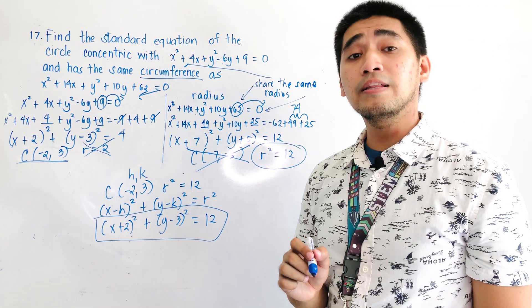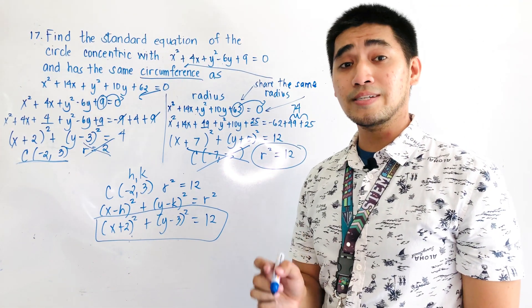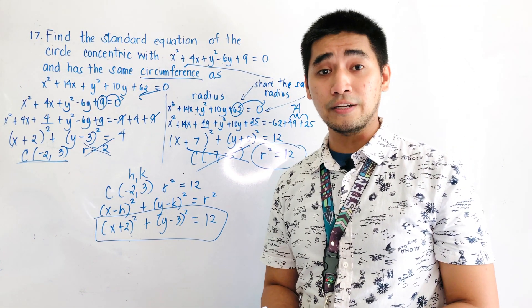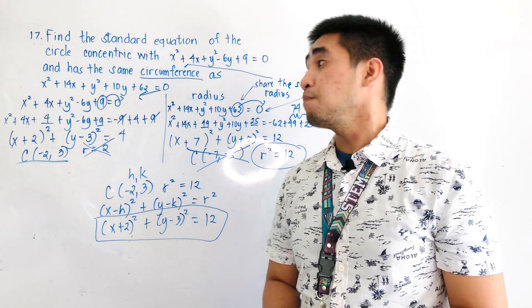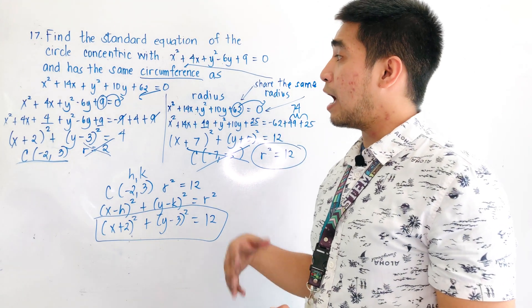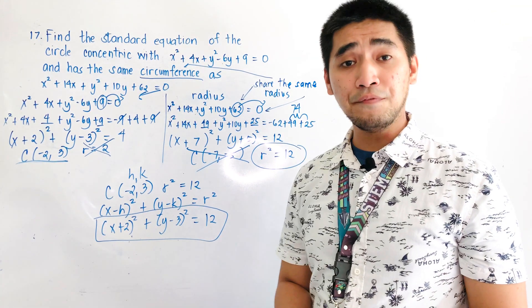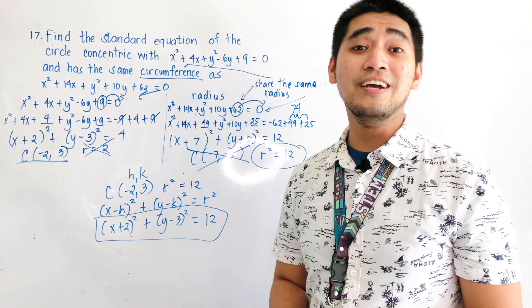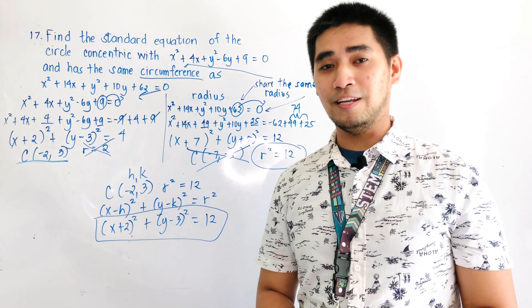Remember: if circles are concentric, they share the same center; but if they have the same circumference, therefore they share the same radius.